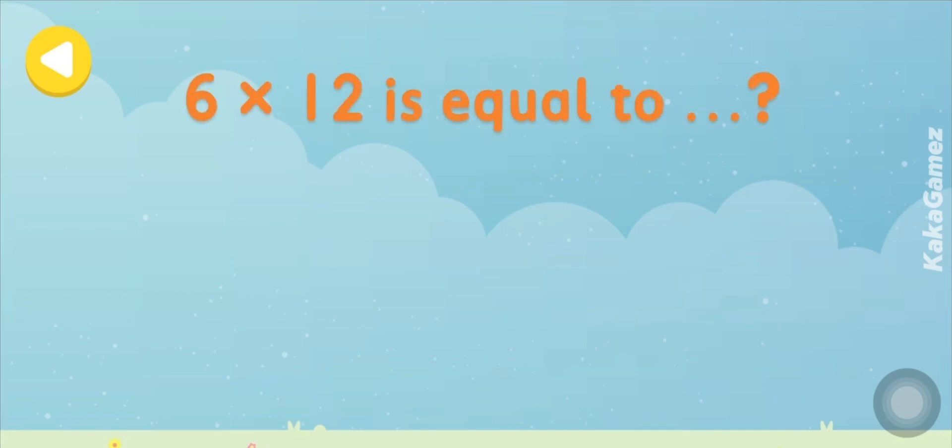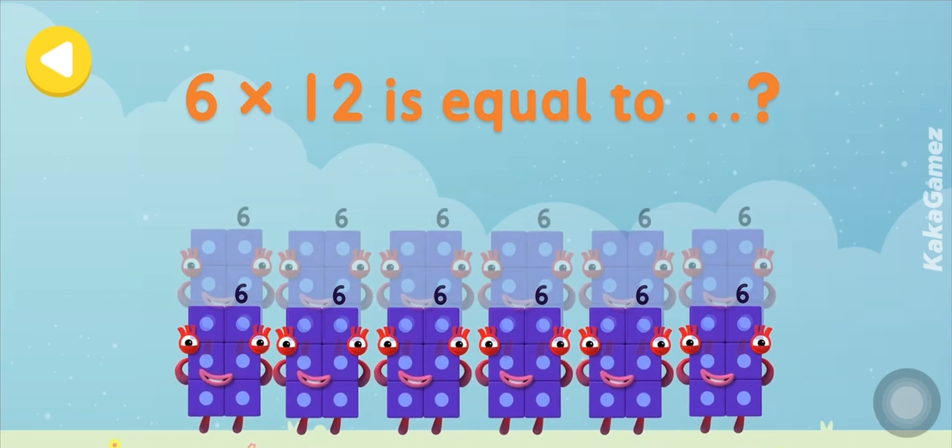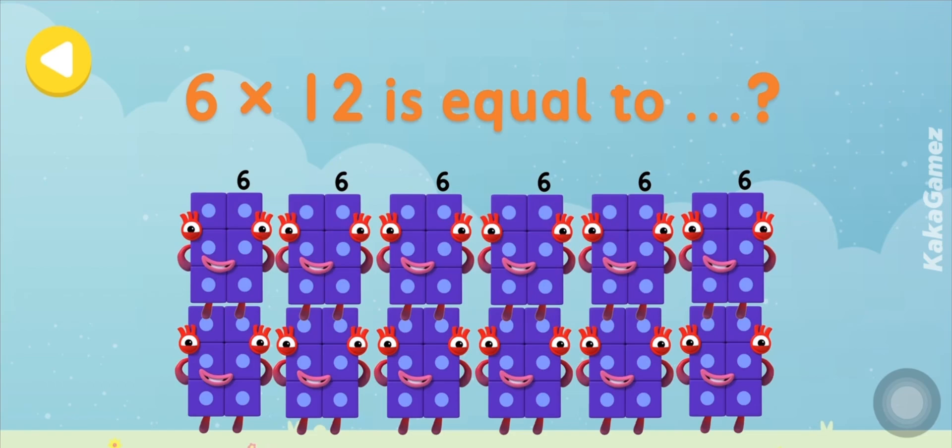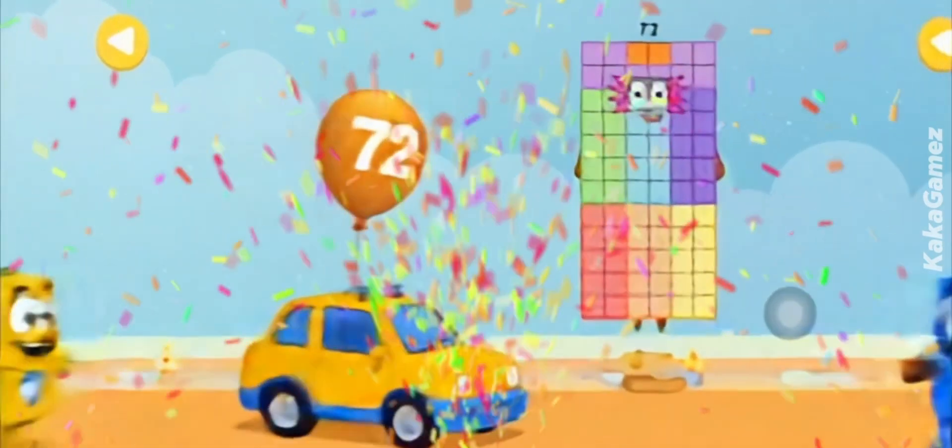Next, what is 6 times 12 equal to? If you arrange 12 groups of 6 blocks, you'll have 72 blocks altogether! Yay!